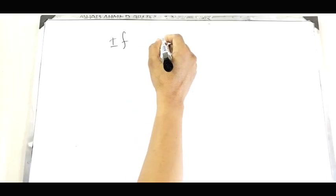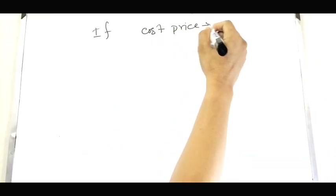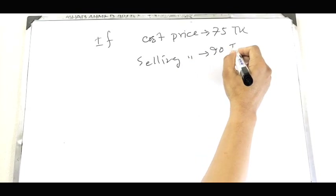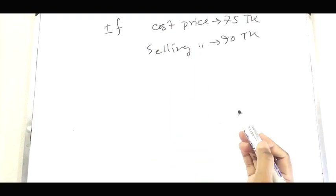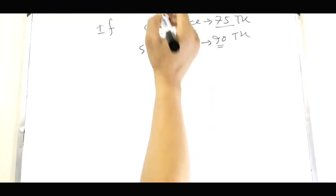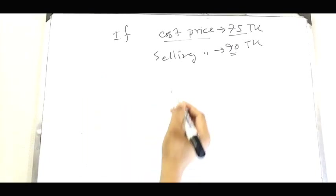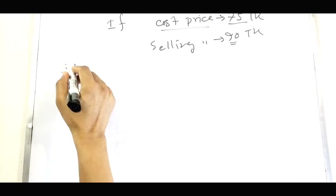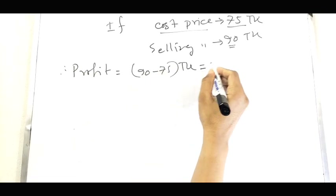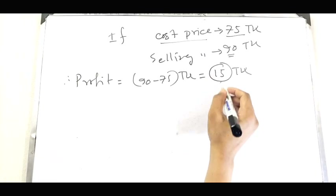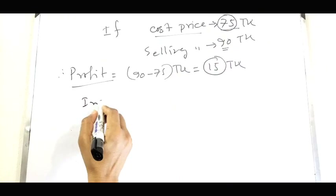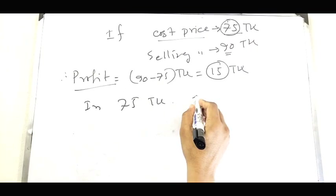Suppose the cost price is $75 and the selling price is $90. In this case, it is profit, because the selling price is greater than the cost price. Profit equals $90 minus $75, that means $15. So profit equals $15. All the time, profit depends on the cost price, which is $75.